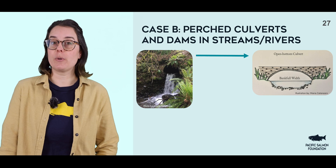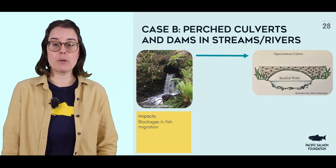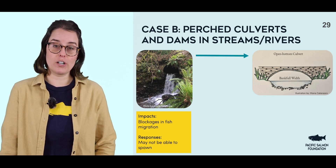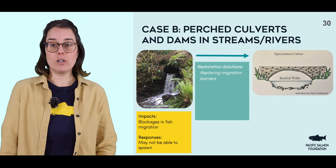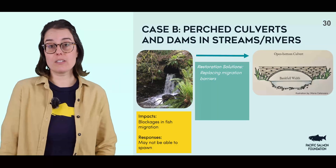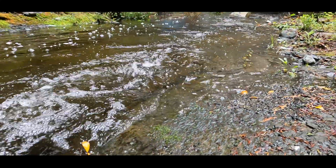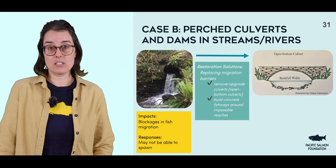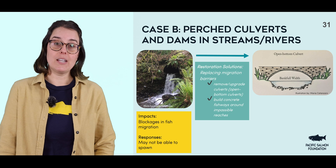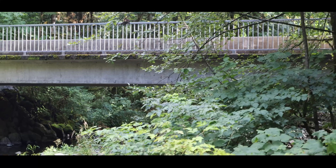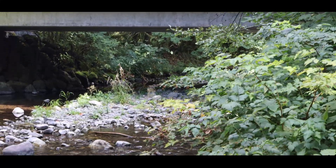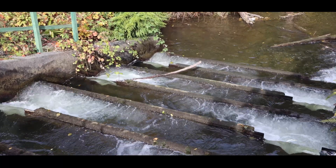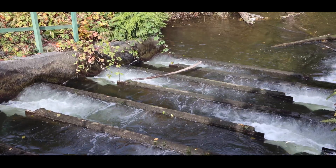There are many potential fish migration barriers, especially when fish are trying to go upstream to spawn. One thing we can do is replace perched culverts. One method is using an open bottom culvert that allows easy access by salmon and maintains the natural stream bottom. You can also replace the culvert entirely. And if there are larger issues with barriers like dams, we can add fish ladders or fishways.